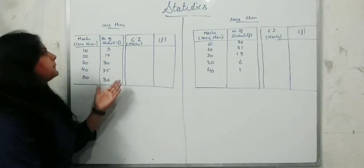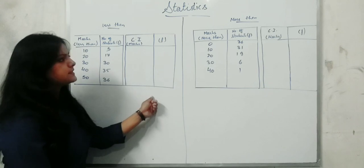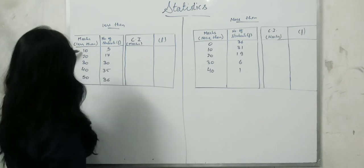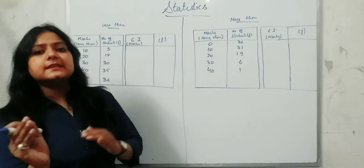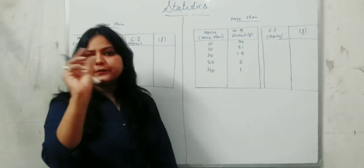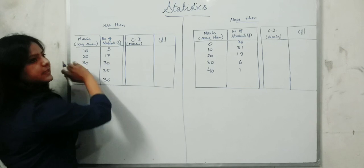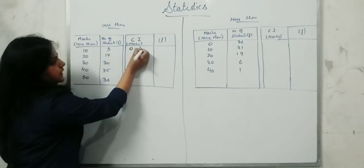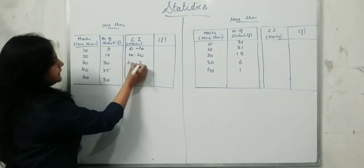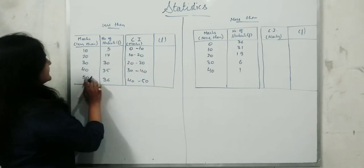Students, now you can see I have mentioned two series — one is less-than and one is more-than. Now let's learn how to convert less-than into CI and more-than into CI. Here, less than 10 means values less than 10. The second value given is 20, so the difference is 10. So if you subtract 10 from 10 you get 0 — making the first class interval 0 to 10, then 10 to 20, 20 to 30, 30 to 40, and 40 to 50.